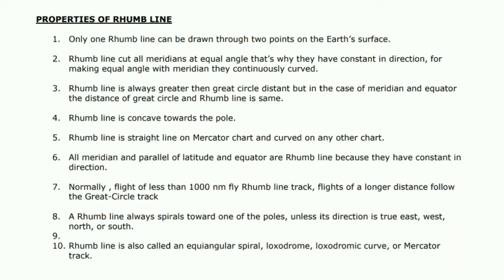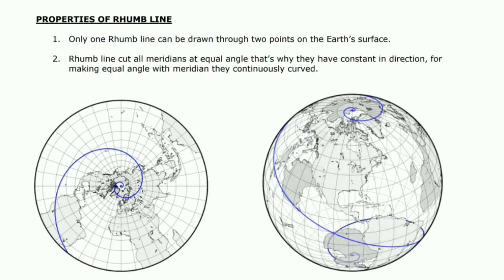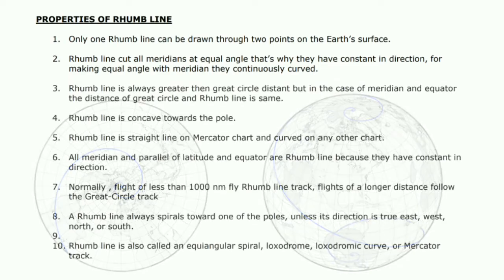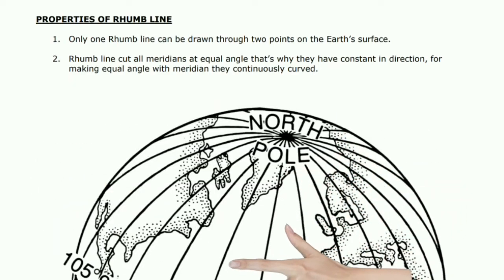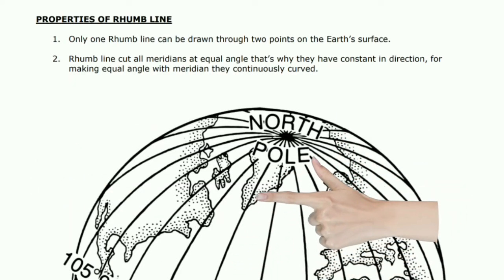Properties of rhumb line: Number one — only one rhumb line can be drawn through two points on the earth's surface. Number two — a rhumb line cuts all meridians at equal angle, that's why it is constant in direction. To make equal angles with meridians, the rhumb line continuously curves. In the diagram, the blue line is a rhumb line — it is curved because meridians are not parallel to each other; all meridians converge to the pole.